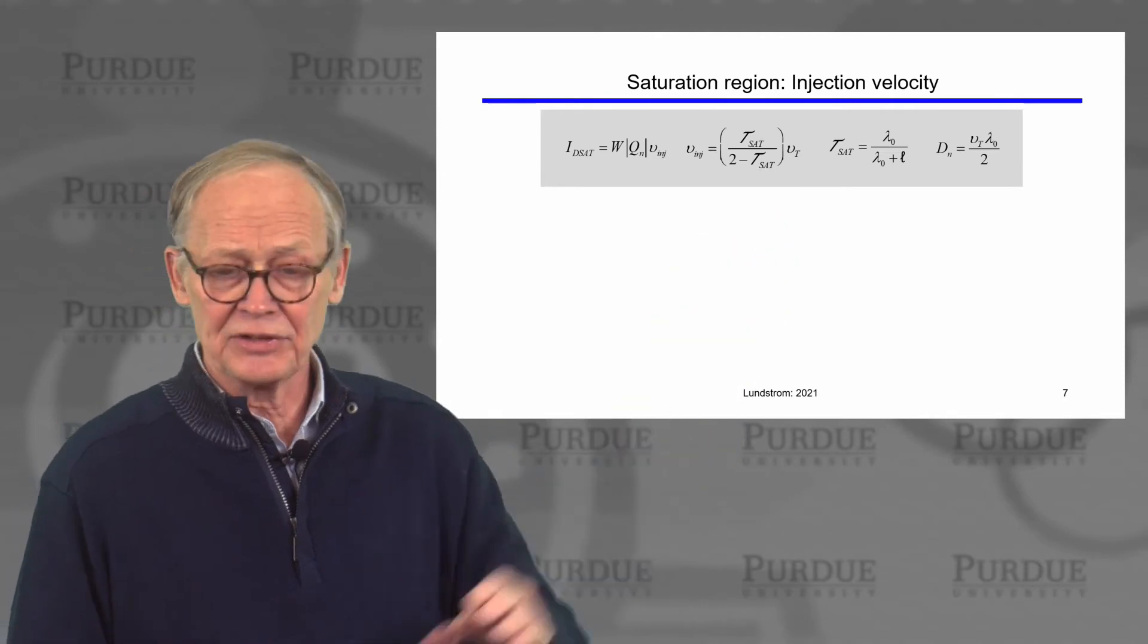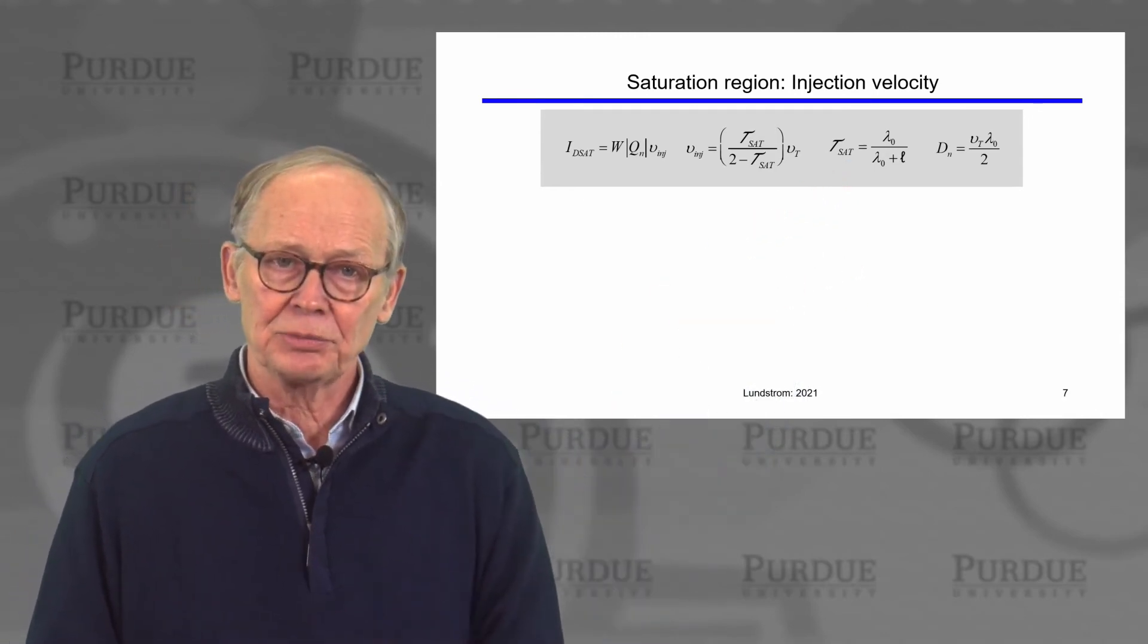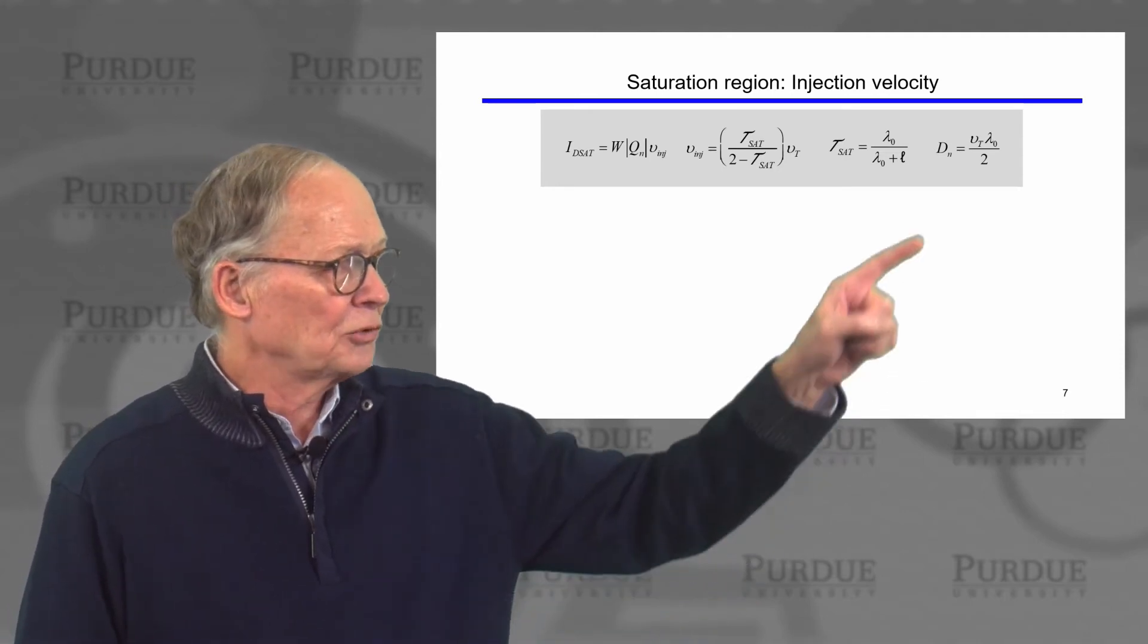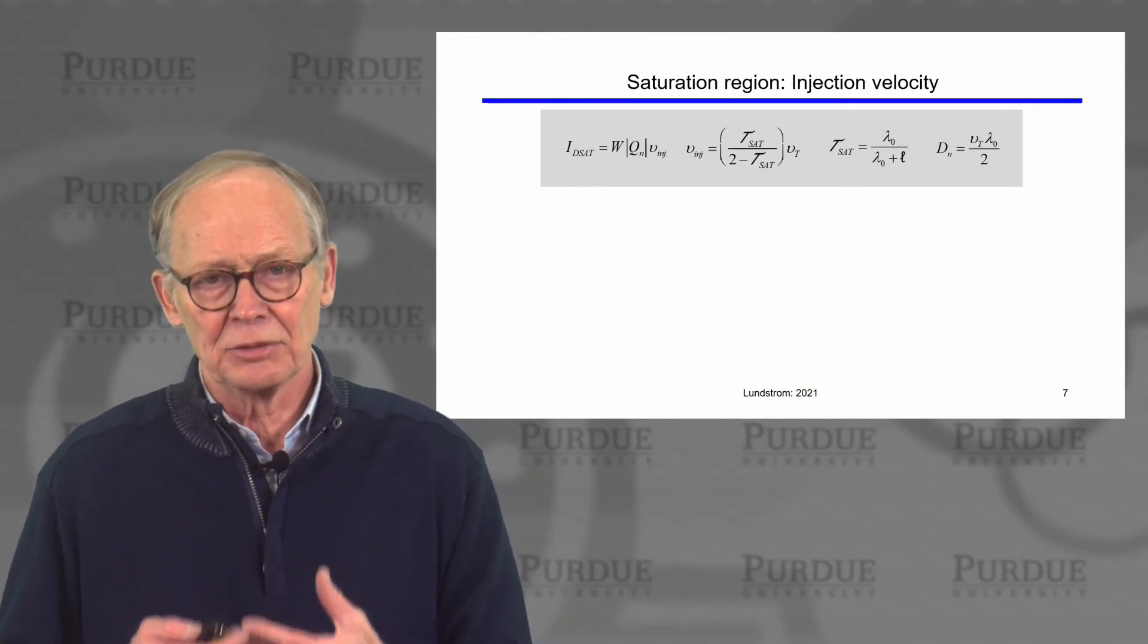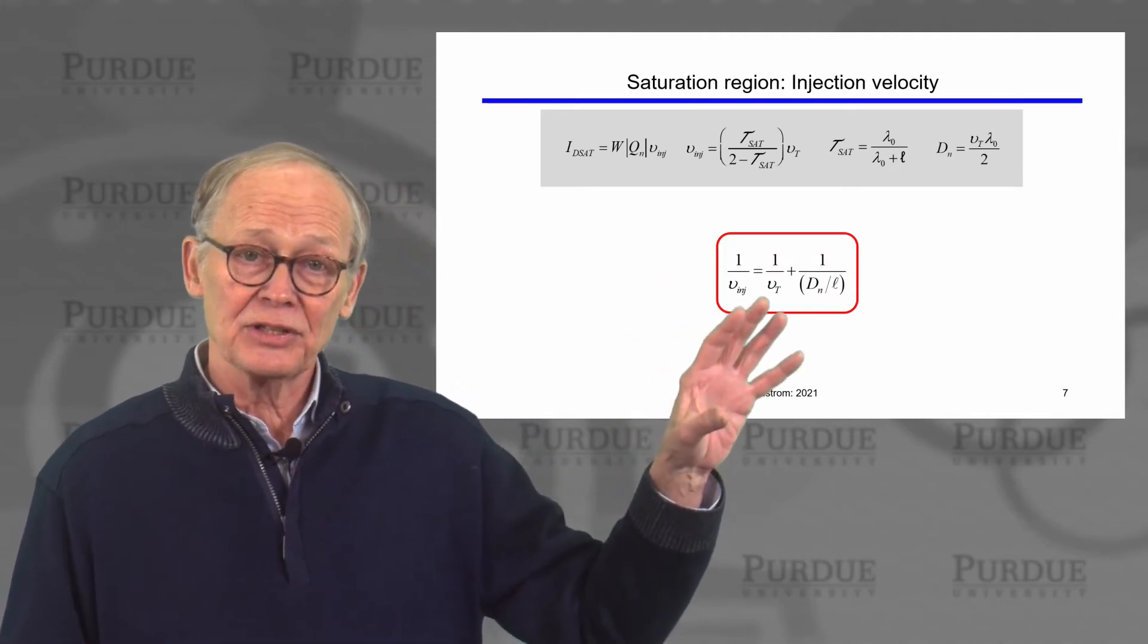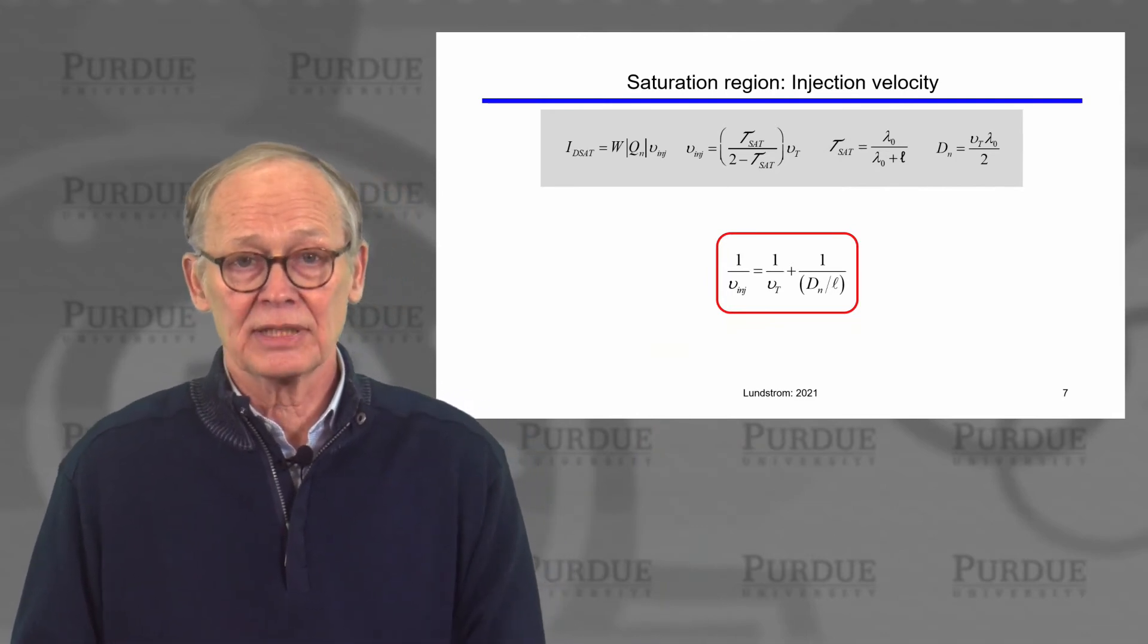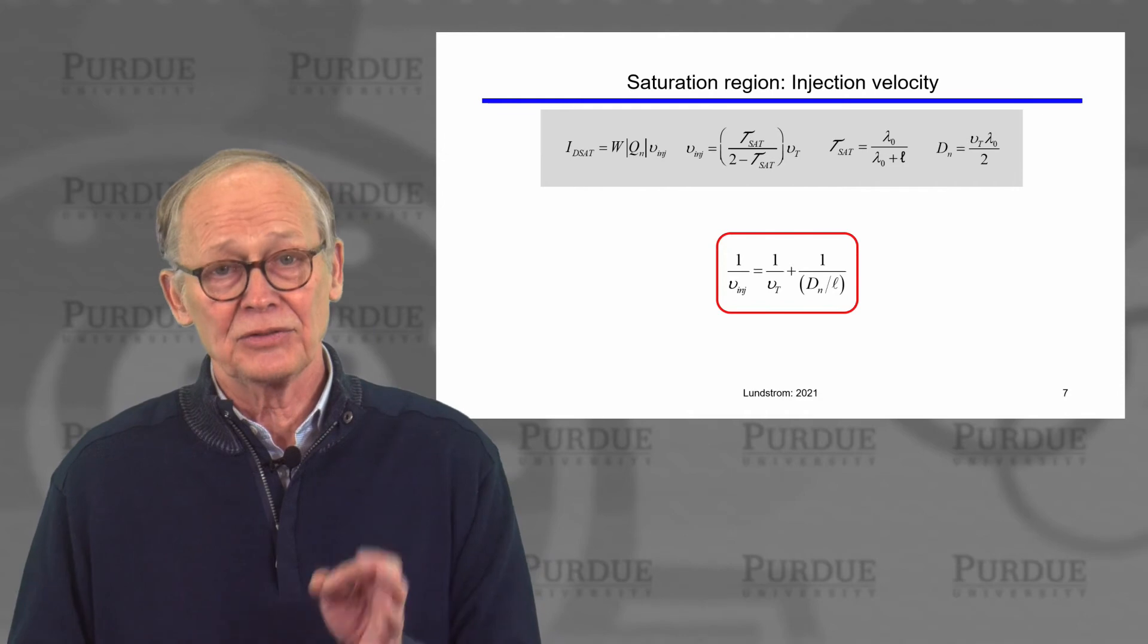Under saturated conditions, we bring in this injection velocity. And let's look a little more carefully at that. A key parameter is the transmission. And remember the script L here is the length of the bottleneck region that the electrons have to get across in order to come out the drain and contribute to drain current. I'll also remind you that we have a simple expression for the diffusion current in terms of the unidirectional thermal velocity and the mean free path for scattering. Diffusion is random thermal motion. We can use these expressions and I encourage you to go through and show that we can write the injection velocity in this way. 1 over the injection velocity is 1 over the unidirectional thermal velocity of electrons, and 1 over D over L. D over L has the units of velocity. It's a diffusion velocity.